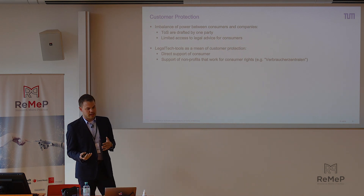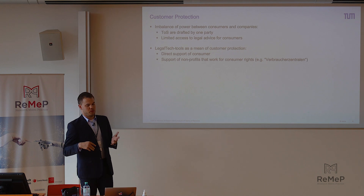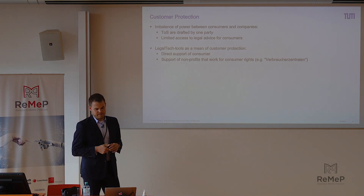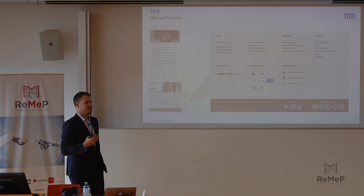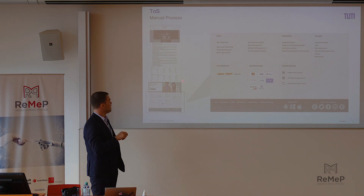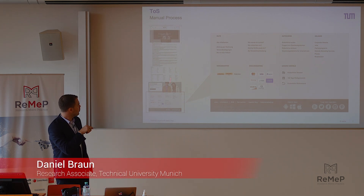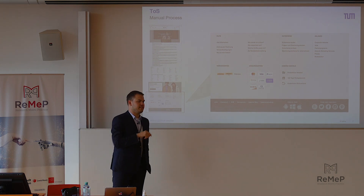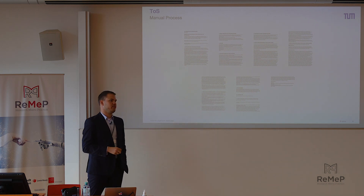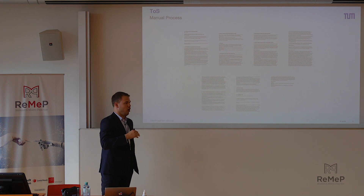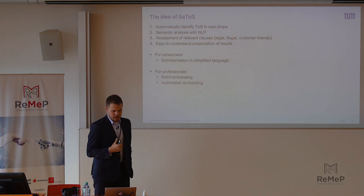We can either directly support customers by giving them access to a legal tech tool, or we can support nonprofit organizations like the Verbraucherzentralen in Germany, who fight for consumer rights. What is the usual process if you actually want to look at terms of services? What you see here is Zalando, and usually your screen starts somewhere in the middle. You have to scroll four to five screens until you find in the lowest corner a little button to get to the terms of services. If you open them, it's about six and a half pages printed — which obviously no one reads.